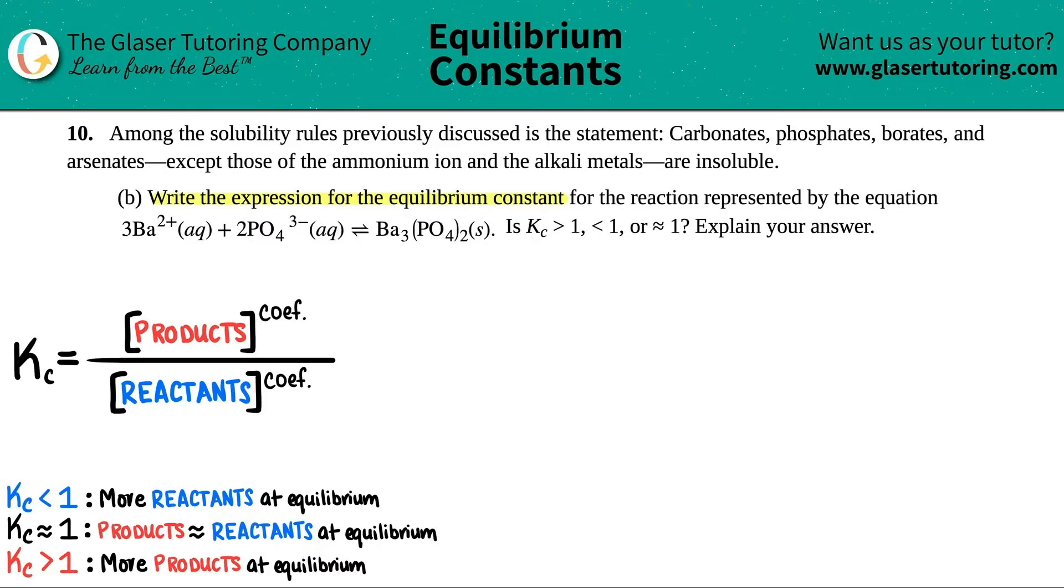So the first thing I'm going to do is just rewrite the equation. I got three bariums, and that's a 2+ aqueous. Now, normally when I write an equation, if you guys have been with me for a long time, you know how much I despise writing the states. I always say, who cares about the states? But in this chapter, we care about them, unfortunately. So I'm writing the states out.